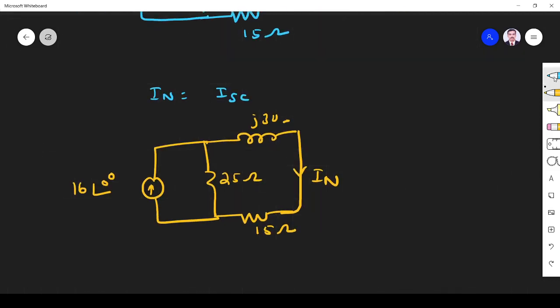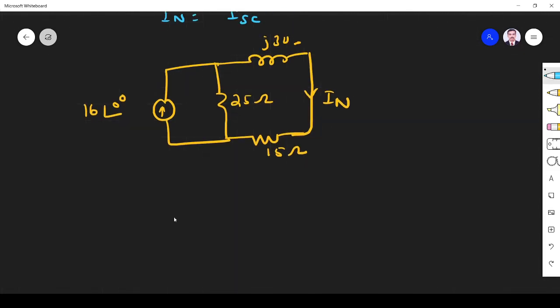So if I want to find Norton current, what I will do? This is the current source, so I apply current divider rule and simplify the I Norton. Since these two are forming this resistance and these two form a parallel, I apply current divider rule.